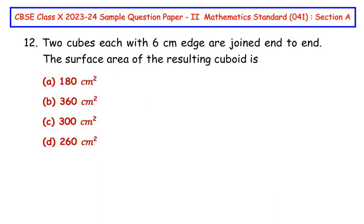This question is from the surface areas and volumes chapter. Two cubes each with 6 cm edge are joined end to end. The surface area of the resulting cuboid is.